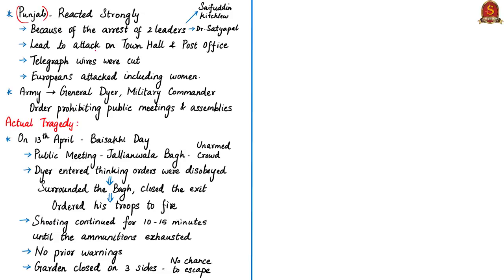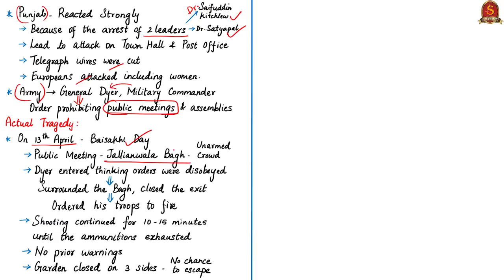Events in Punjab were moving in a particularly tragic direction. The arrest of two leaders, Dr. Saifuddin Kichlu and Dr. Satyapal, led to attacks by people on the town hall and post office; telegraph wires were cut and Europeans including women were attacked. As a result, the army was called in and the city was handed over to General Dyer, the British military commander of Amritsar, who issued an order prohibiting public meetings and assemblies. All these events led to the day of 13th April, a Baisakhi day, when a large unarmed crowd gathered in the Jallianwala garden to attend a public meeting.